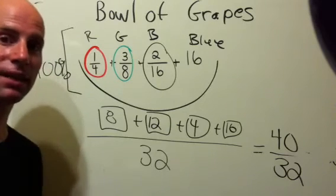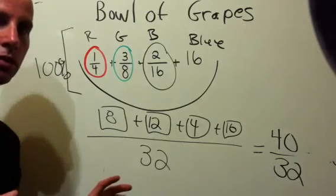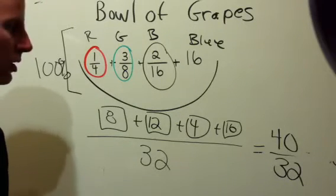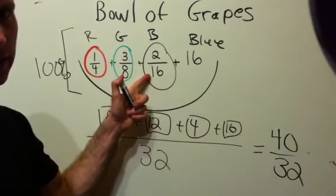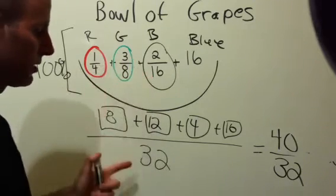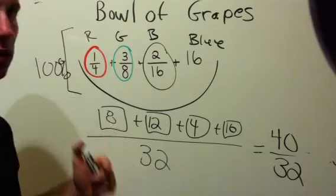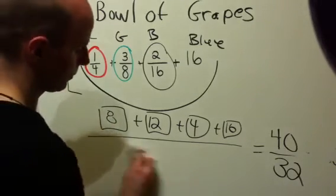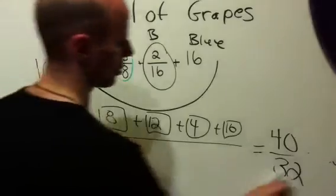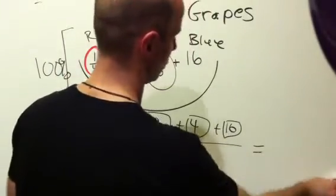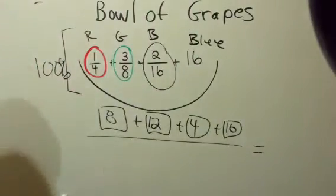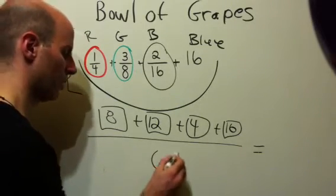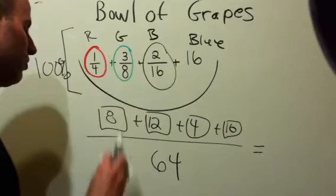In a case like this, all you need to do is ask yourself, what would be the next possible number of grapes? Well, since 16 is in here, if it's not 16 and it's not 32, I'm going to bump it up to the next step. We tried 32, let's try 64. What happens if we test out 64?